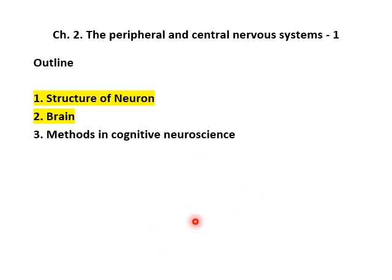Hello. This is Part 1 of Chapter 2, the Peripheral and Central Nervous Systems. In this chapter, we're going to discuss the structure of neurons, brain, and the methods in cognitive neuroscience. One of the prerequisites for this course is the brain and behavior, so I assume you have successfully completed that course. This chapter will be a rather brief review of brain structure and function.